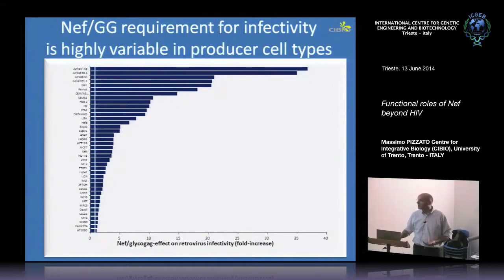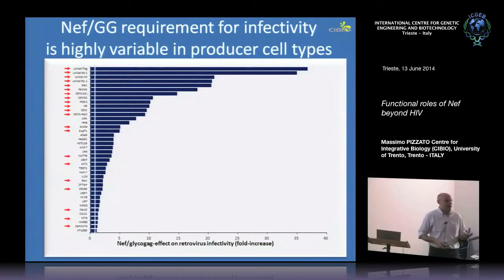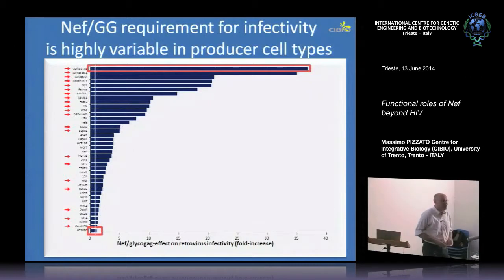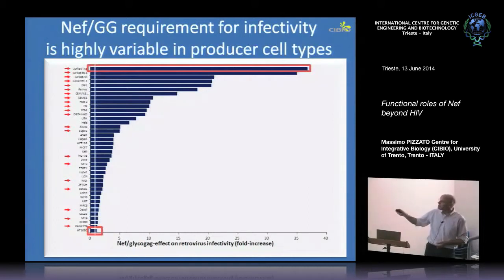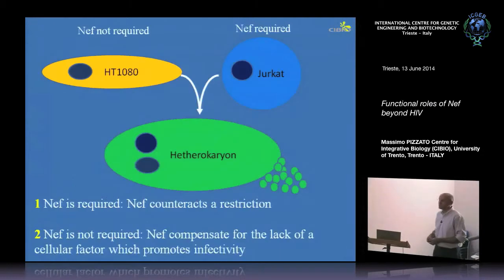Looking at cell lines ranging from 1 to 40-fold NEF dependence, most of the cells where NEF is strongly required are of hematopoietic origin — which makes sense, since HIV is a lymphotropic virus, as is MLV. There must be something expressed or lacking there. We asked whether this is something dominant in these cells by taking the first and last cell line on the scale — HT1080 and Jurkat — and fusing them together to see the phenotype of the hybrid cells.